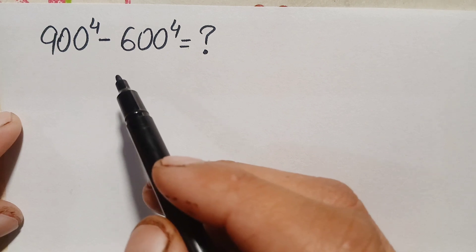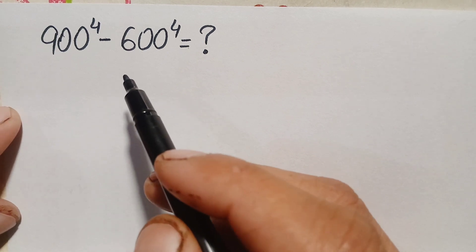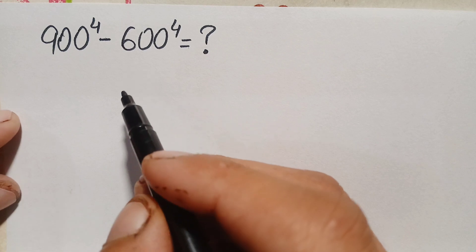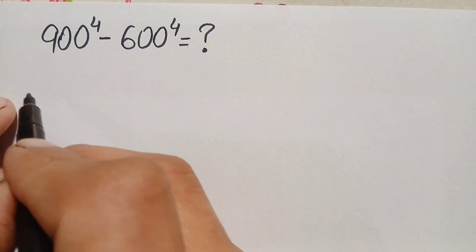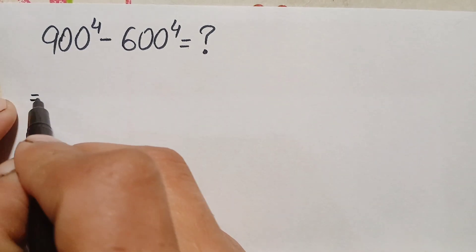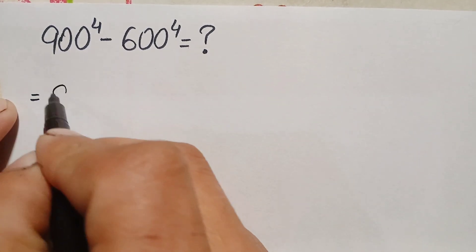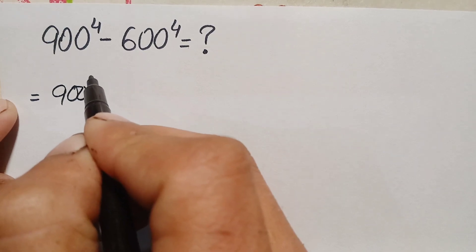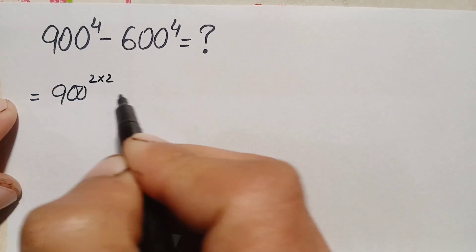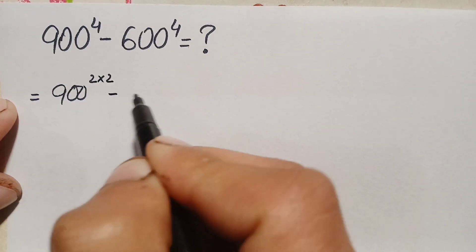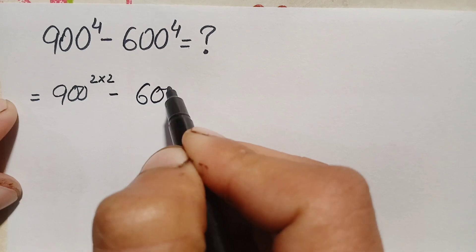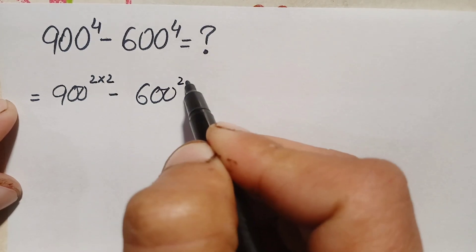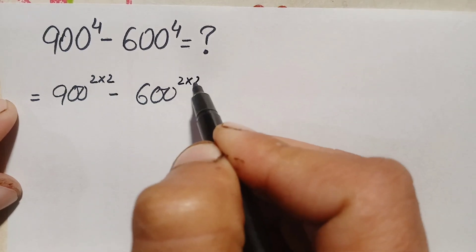So how can we deal with this math problem? First of all we will do some changes in the power of these two numbers. So we can write 900 raised to power 4 as 2 times 2, which is 4, minus 600 raised to power 4, where 4 can also be written as 2 times 2.